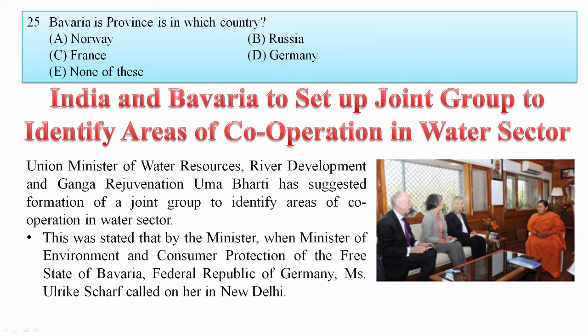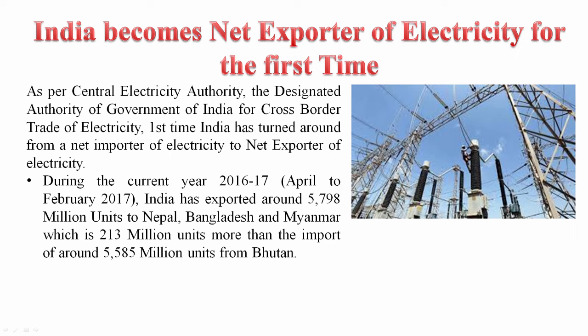Bavaria is a province in which country? Bavaria is a German province. India and Bavaria agreed to form a joint group to identify areas of cooperation in the water sector. So your answer is D — Germany.